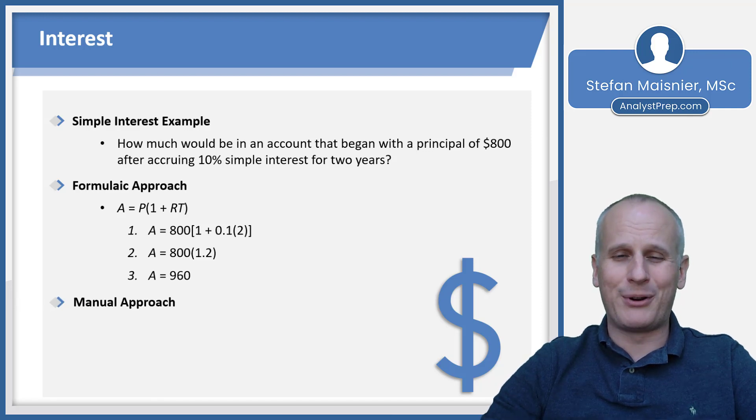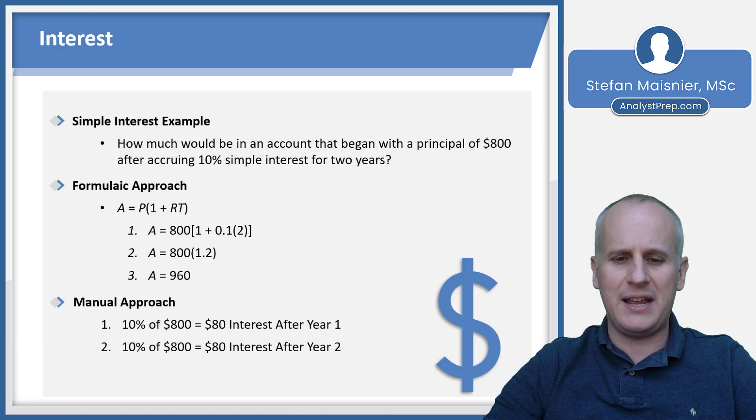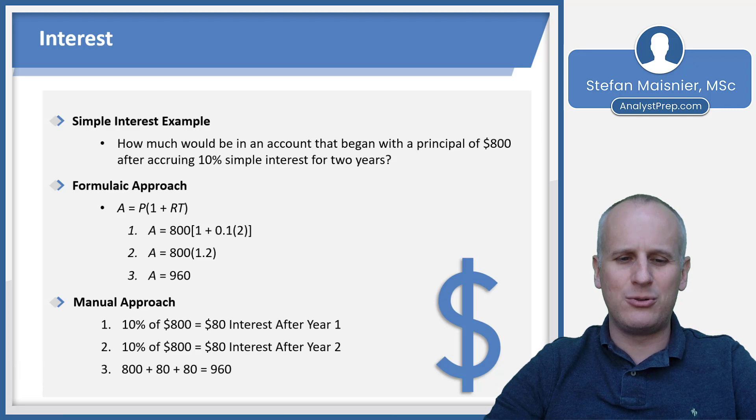Now, our manual approach without the formula for interest is as follows. You can take 10% of 800 for the interest after year one, so that's 880. Then you take 10% of the 800, another $80 of interest after year two, because we did not reset the original principle. We add those two 80s to the 800, and we get the same 960.